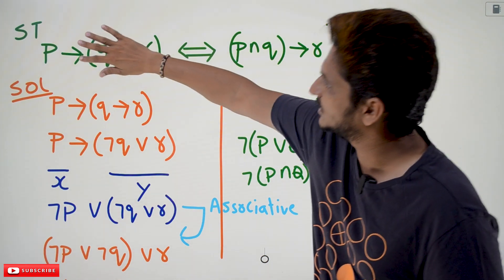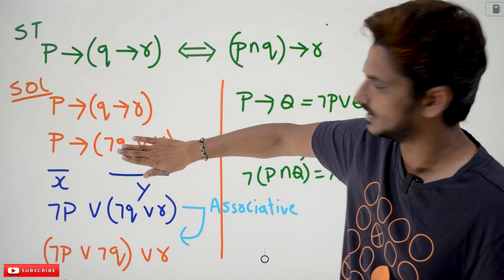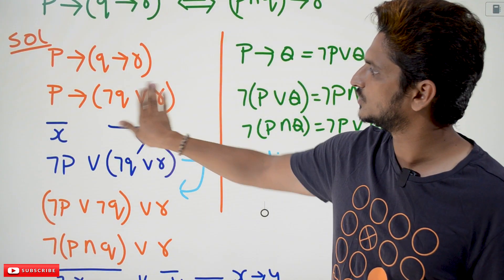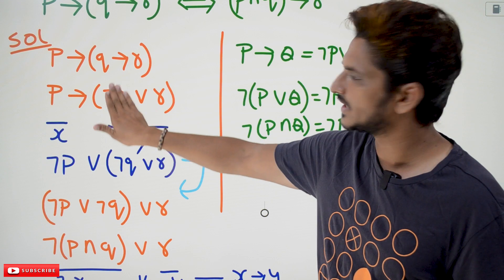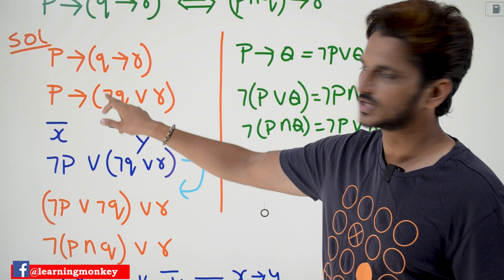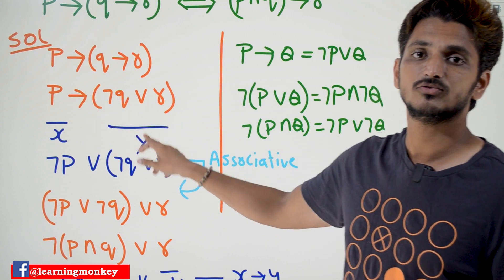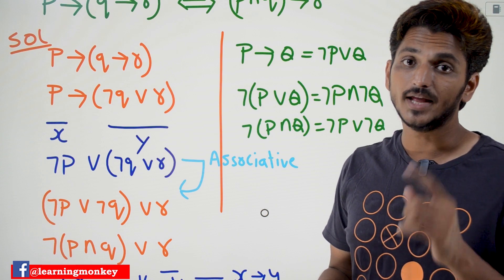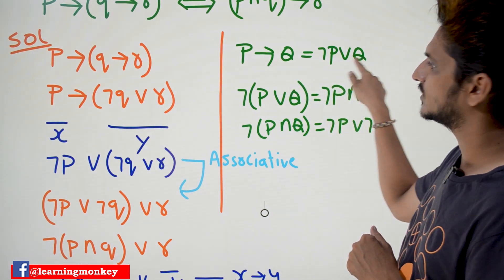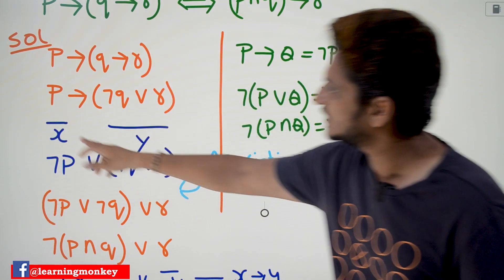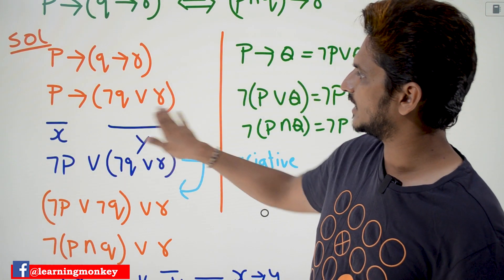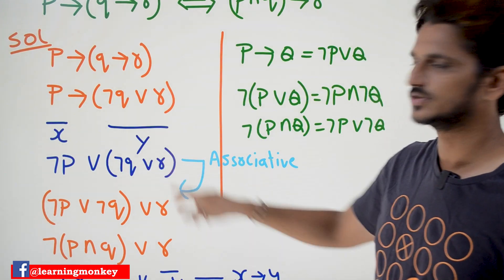After converting, we got this equation. Now assume that the proposition P implies Q is called X, and this entire proposition (negation Q disjunction R) is called Y. X implies Y can be converted into negation X disjunction Y — same equation. So negation X means negation P disjunction, and Y means this entire proposition negation Q disjunction R.